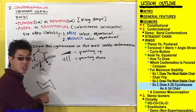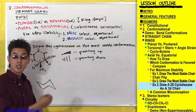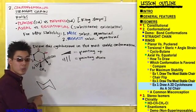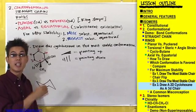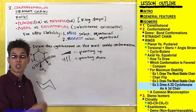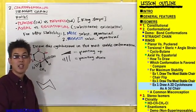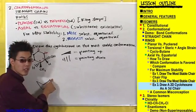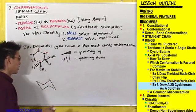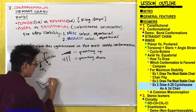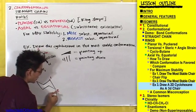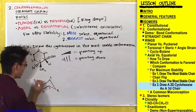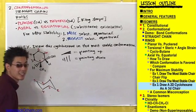Now I'm going to do the same thing with this chair. You can start from whichever carbon you want on this ring and number it in any direction — clockwise or counterclockwise. I'm just going to start from this carbon here and work my way clockwise: carbon number one, two, three, four, five, and six.